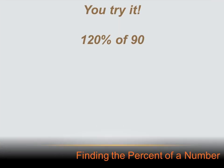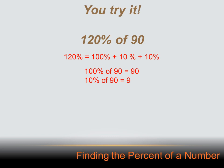Try this one: 120% of 90. We know that 120% equals 100% plus 10% plus 10%. 100% of 90 equals 90, and 10% of 90 equals 9. So 120% of 90 equals 90 plus 9 plus 9, or 108.